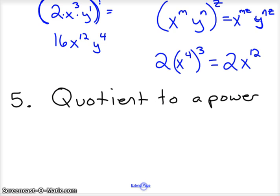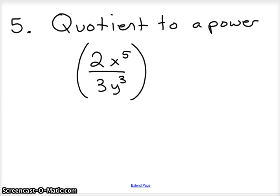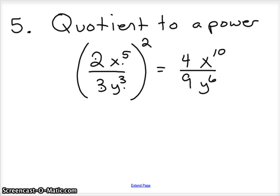Quotient to power is very similar — same idea but with division. Let's say you had 2x to the fifth over 3y to the third, all to the second power. We apply the power to everything inside the parentheses. 2 squared is 4; x to the fifth to the second is power to power, giving x to the tenth. Over: 3 squared is 9, and y to the third to the second is y to the sixth. That's the quotient to a power rule.